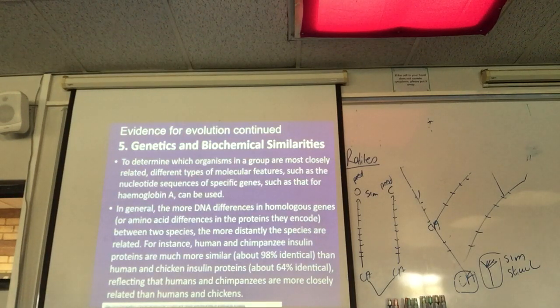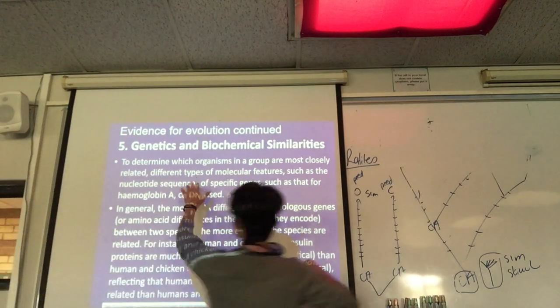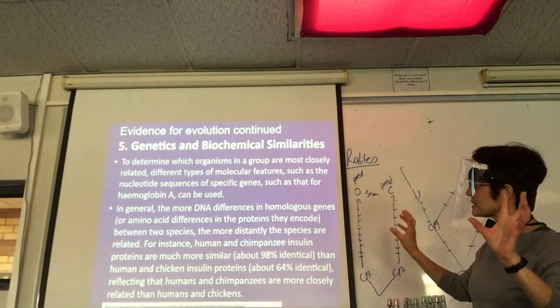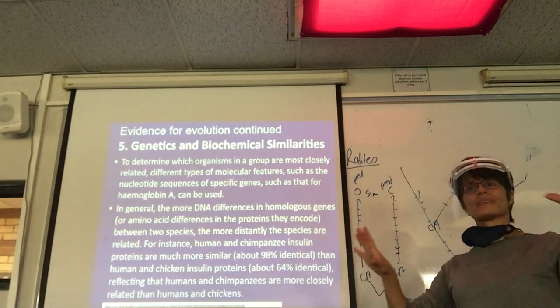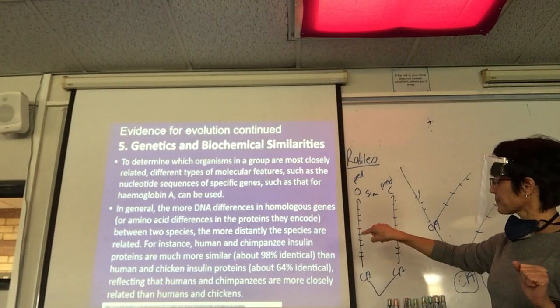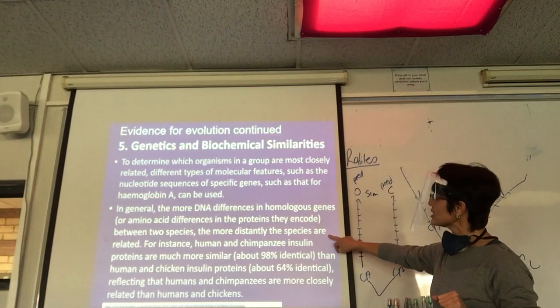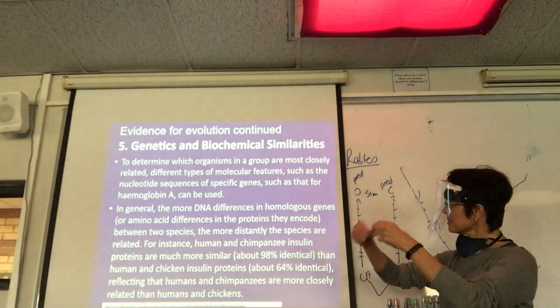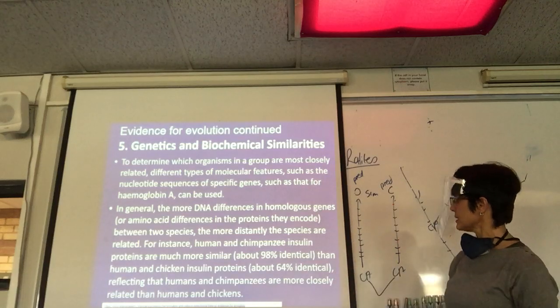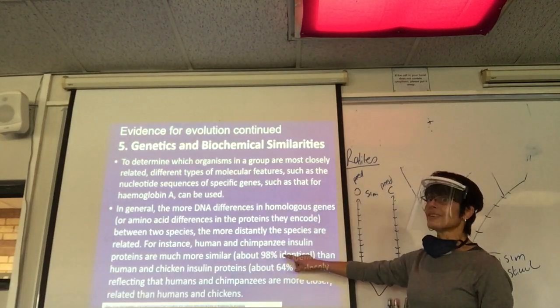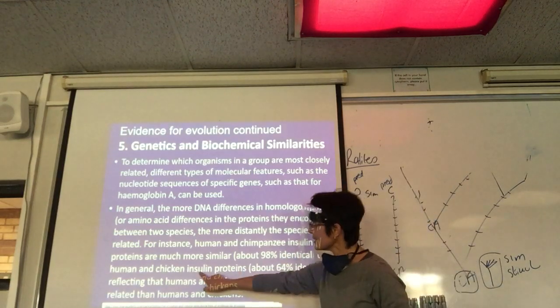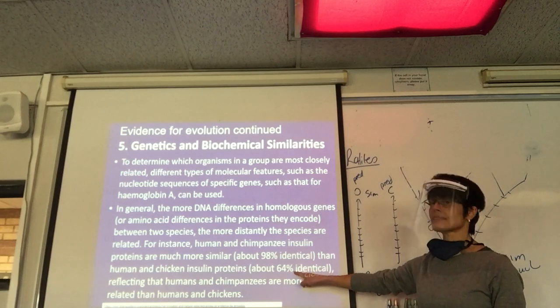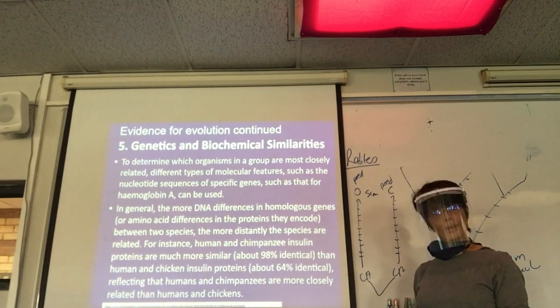So the more closely related, the more similar the nucleotide sequences, like hemoglobin A. So you'll see questions where they give you different sequences and compare the DNA sequence, and then see how it's different. Yeah, so the more distantly related the species are, the more different the gene, the more different the protein. The more similar they are, the more similar the DNA, the more similar the protein. So our chimp and human DNA, or the gene for insulin, is 98% identical. But chicken insulin is very different. Only 64% of the gene for chicken DNA is the same as ours. So we definitely couldn't use that as a substitute for, you know, if we have diabetes.